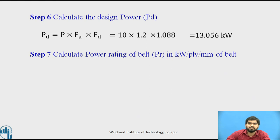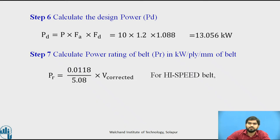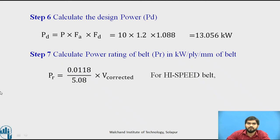Step 7: Calculate the power rating of the belt, PR. Since we are using a high-speed belt for which the given reference data states PR = 0.0118 kW at 5.08 m/s, we scale it to our application: PR = (0.0118 / 5.08) × V_corrected = (0.0118 / 5.08) × 18.85. This gives PR = 0.04376 kilowatt per mm width per ply.